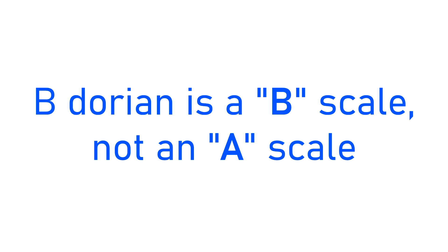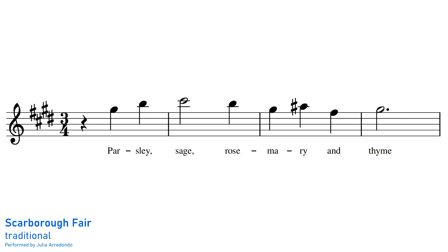A common point of confusion with modes is that even though they're derived from a major scale, they're related to a major scale, you won't really be using them alongside that major scale. For example, B Dorian is derived from A major, but you'd rarely be using B Dorian with A major. You're more likely to use B Dorian with B major or B minor. B Dorian is a B scale, not an A scale, even though its notes are derived from A major. When Dorian is used in a melody, it lends an ethereal, intriguing quality to a song.